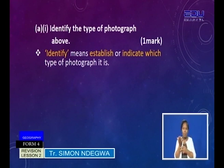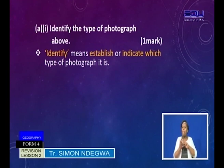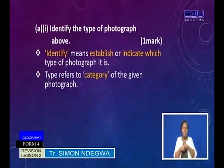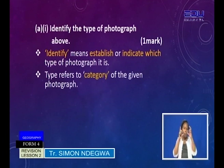It is allocated one mark. When we talk about identify, it means to establish or indicate which type of photograph it is — simply, to establish or indicate which type of photograph this one is. When you think about the type of photograph, it refers to the category in which the photograph belongs.